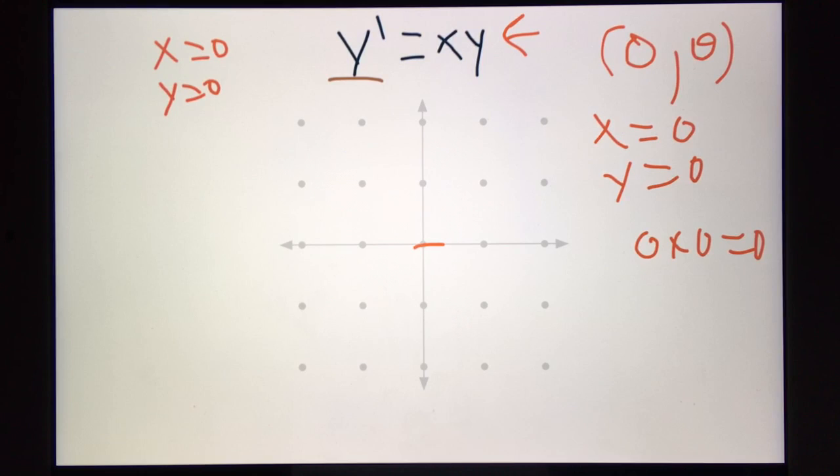And these are called equilibrium points, or when you draw them in a line, a line of equilibrium. You always want to find these points first, because they are the easiest points to find, and will start to give you a basic idea of what your slope field will look like.